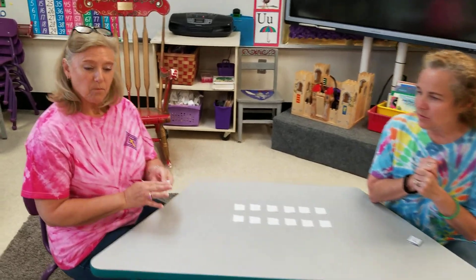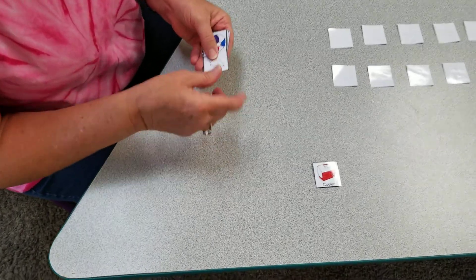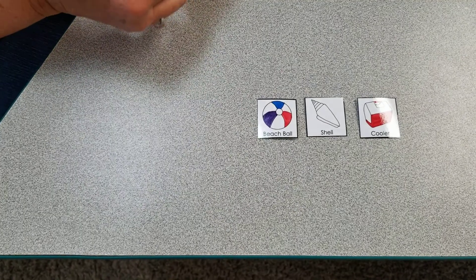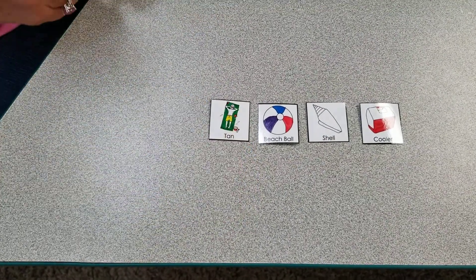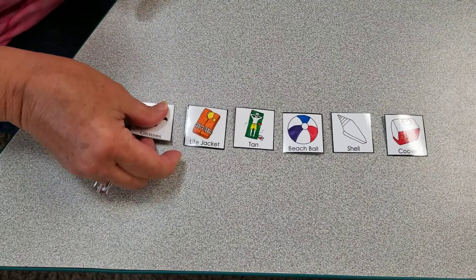So Miss Jones, you want to share yours? All right, in my cards I have a cooler, gotta have that if you go to the beach, a shell, a beach ball, a person getting a tan, a life jacket, and sunglasses.